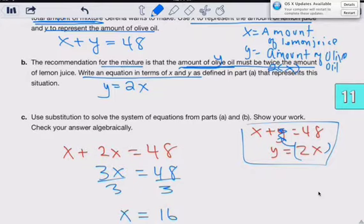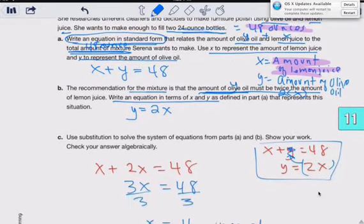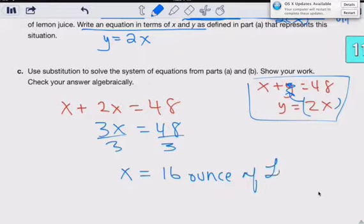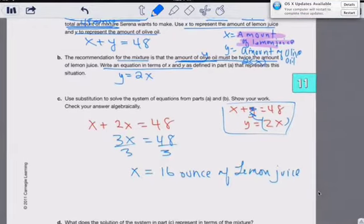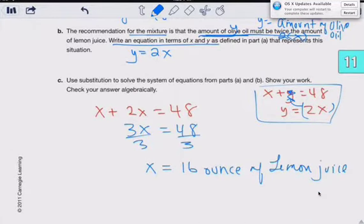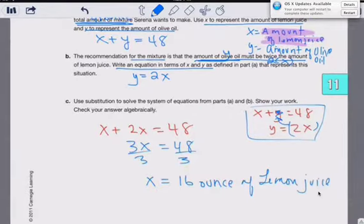That 16 means 16 ounces of lemon juice. X represents the amount of lemon juice. 16 ounces of lemon juice, because they're talking about ounces up here.